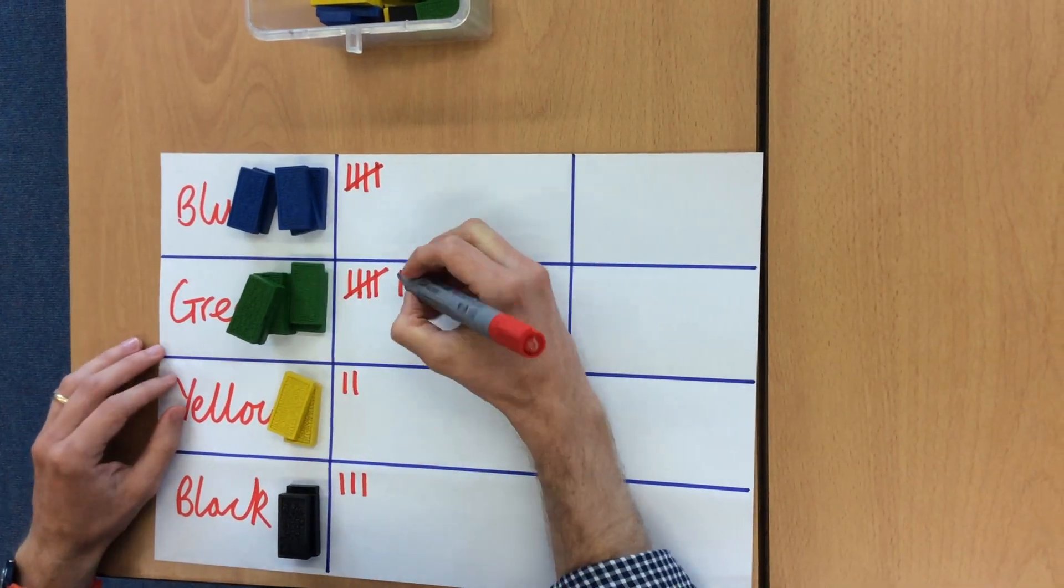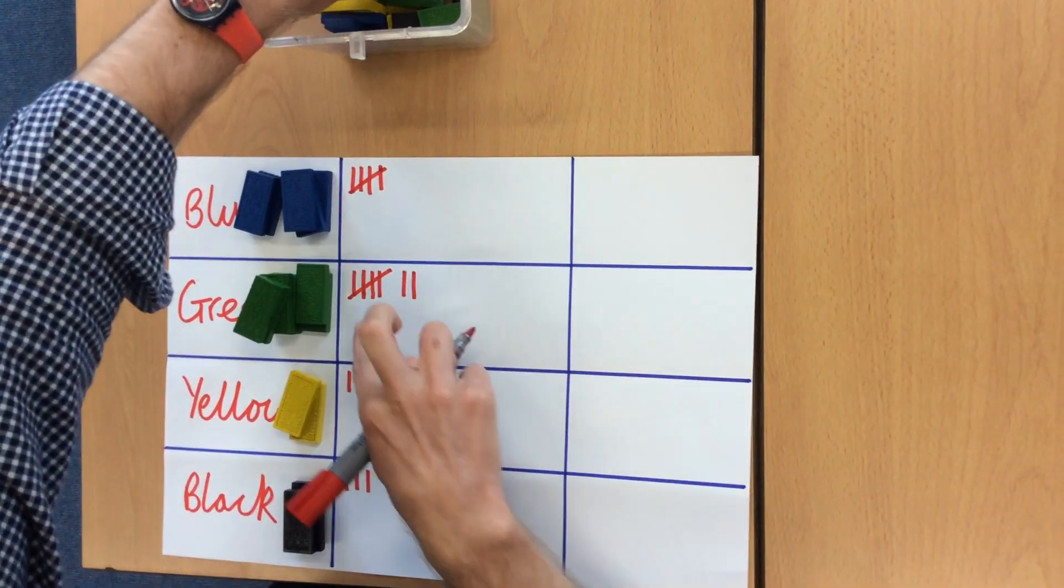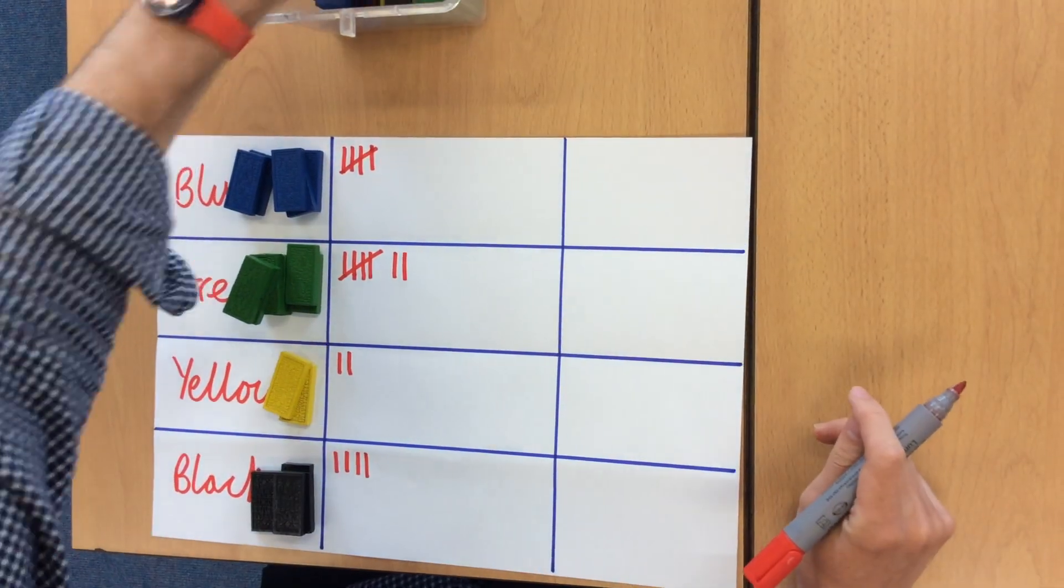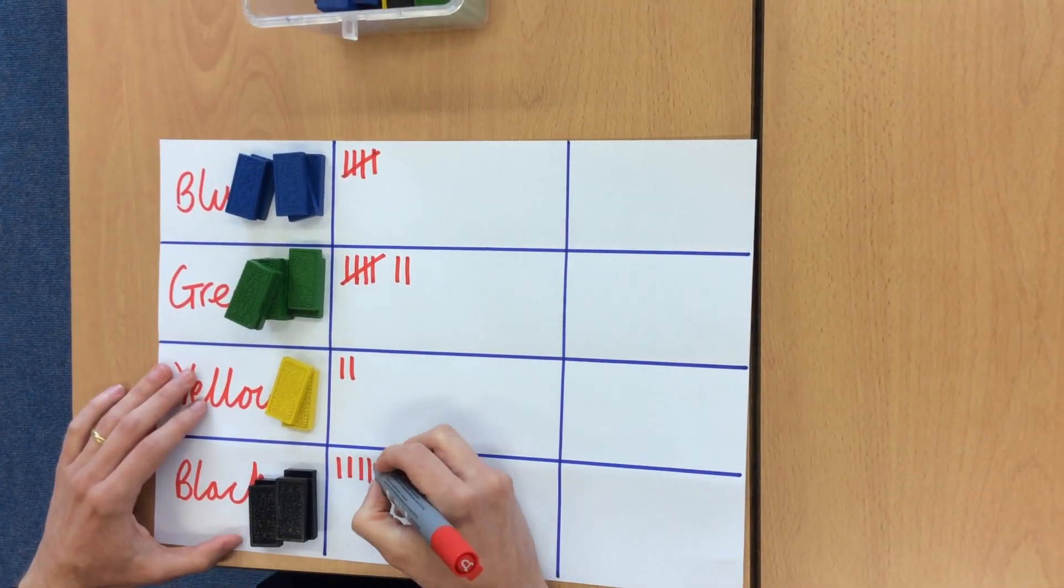Yet one more green, which brings me up to seven on my tally, five and two is seven. I am black, so I have got four for black. And another one, five for black. Oh!